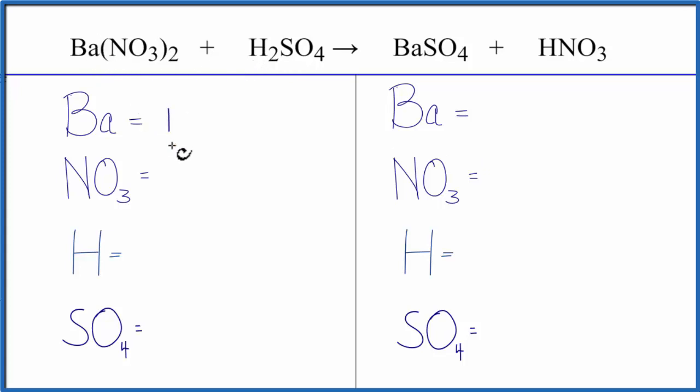We have one barium, and then NO3, that's the nitrate ion. We have it here and we have it over here. So when we have these double displacement reactions, it's often useful to count the polyatomic ions as just one item if they appear on both sides. We have one NO3 times the two, that gives us two of the nitrate ions, two hydrogens, and again we have the sulfate ion SO4. We have it here and we have it here, so we have one SO4.